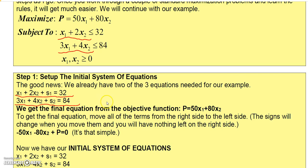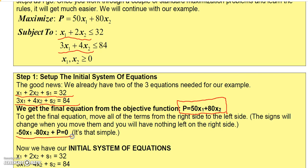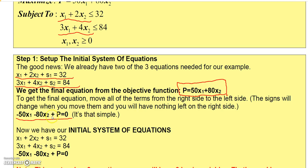Now we take the objective function and we've got to get an equation from it. We have to move all of the x terms from the right side to the left side. We need to move the 50x1 and the 80x2 to the other side of the equal sign — they'll change sign. So basically we're setting this equation equal to zero by moving all terms to the left. You get minus 50x1 and minus 80x2, and p will still be there with zero on the right.